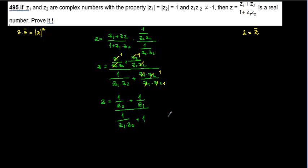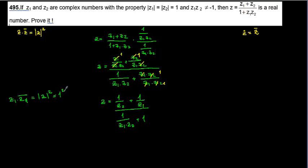Now I apply the key property. Since |z1| = 1, we know z1 times z1-conjugate equals |z1|² = 1² = 1. Therefore 1 over z1 equals z1-conjugate. The same applies to z2: 1 over z2 equals z2-conjugate. I'll highlight this property separately as it is part of the explanation, not the solution itself.